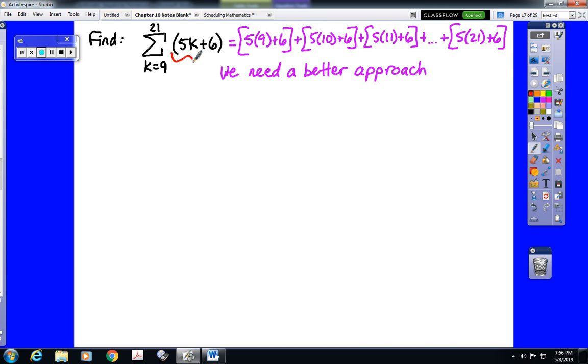Which fortunately we can easily have one. Notice that f of k is a linear function. That means this is an arithmetic series. So we need to plug in three things. We need to know the first term, which is when k equals the bottom number, 9. We need to know the last term, which is when k equals the top number, 21. And we need to know n, which we have an exact formula for.